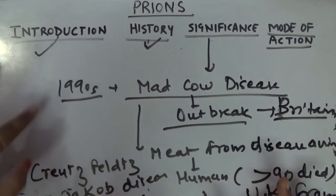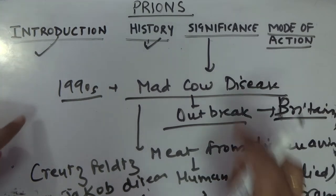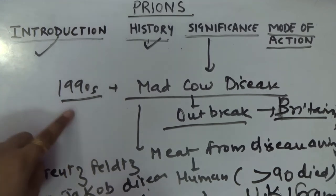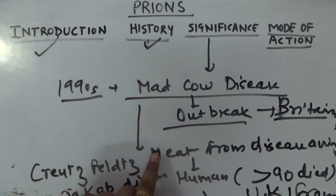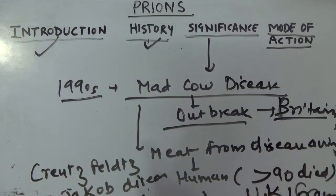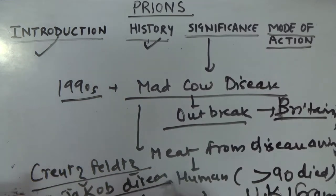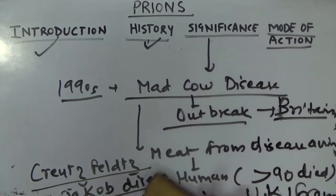This indicates the significance of this microbial group — prions. In the 1990s, the mad cow disease outbreak led to an epidemic where a large population of bovine animals were affected in Britain, and when humans ate the meat of infected cows, it resulted in a variant known as Creutzfeldt-Jakob disease, which originated from the mad cow disease. This shows the importance and significance of prions.